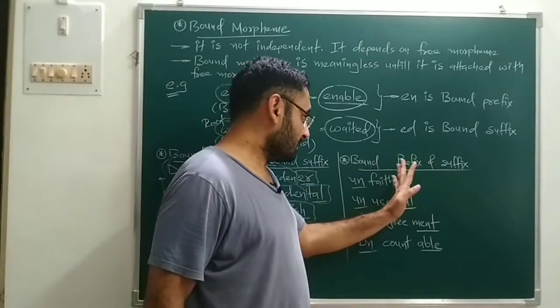For bound suffixes, the suffix is written after the root. Root examples: gardener, accident, child — these words have their own meaning and are free morphemes. The suffixes 'er', 'ar', 'ish' don't have any meaning on their own — they are meaningless until attached to the free morpheme, and placed at the end, making them bound suffixes.